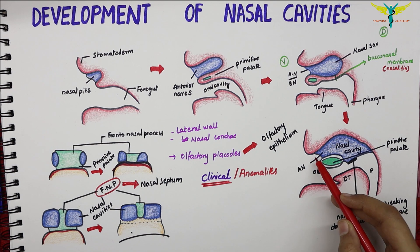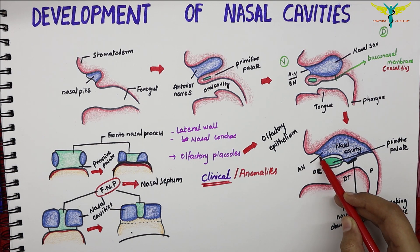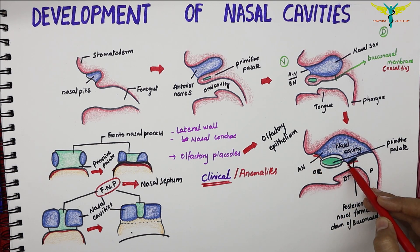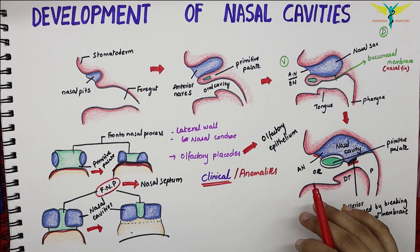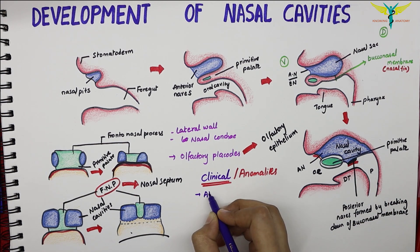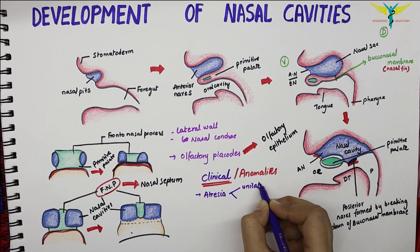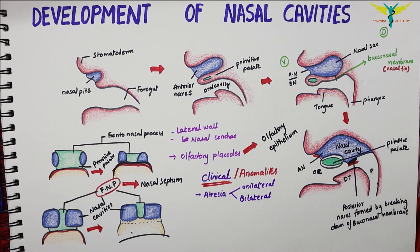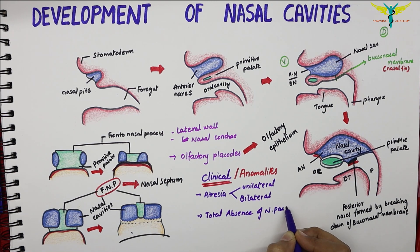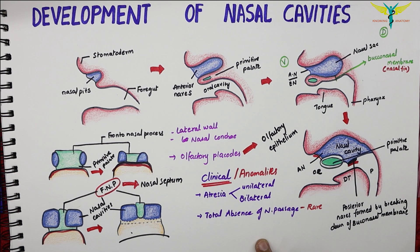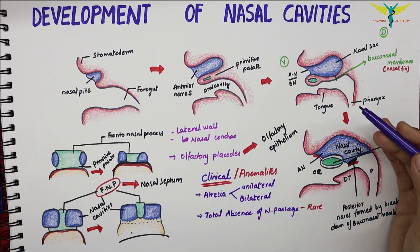Clinically, there may be atresia of the nasal cavity at the external nares, at the posterior nasal apertures, or in the cavity proper. This may be unilateral or bilateral. Very rarely, there may be total absence of the nasal passages. Congenital defects in the cribriform plate of the ethmoid bone may lead to a communication between the cranial cavity and the nose.